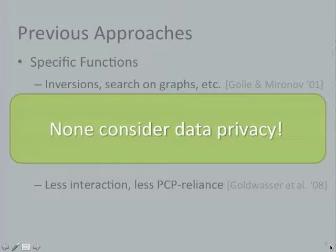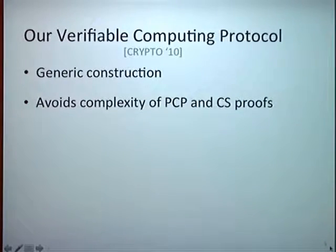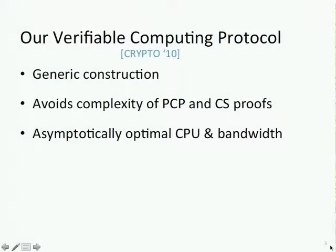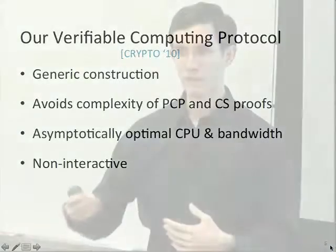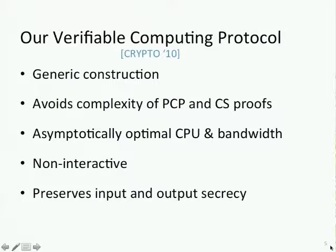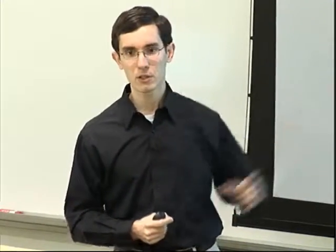There's been work on reducing reliance on PCP, but any time PCP is involved, everything gets much more complicated, larger, and harder to deploy in practice—so it would be nice to avoid this machinery. None of this previous work considers data privacy; it was all about integrity, not secrecy. In contrast, the protocol we developed is generic and works for any function, avoids the complexity of PCP and CS proofs, is asymptotically optimal in CPU and bandwidth, is non-interactive, and preserves input and output secrecy.